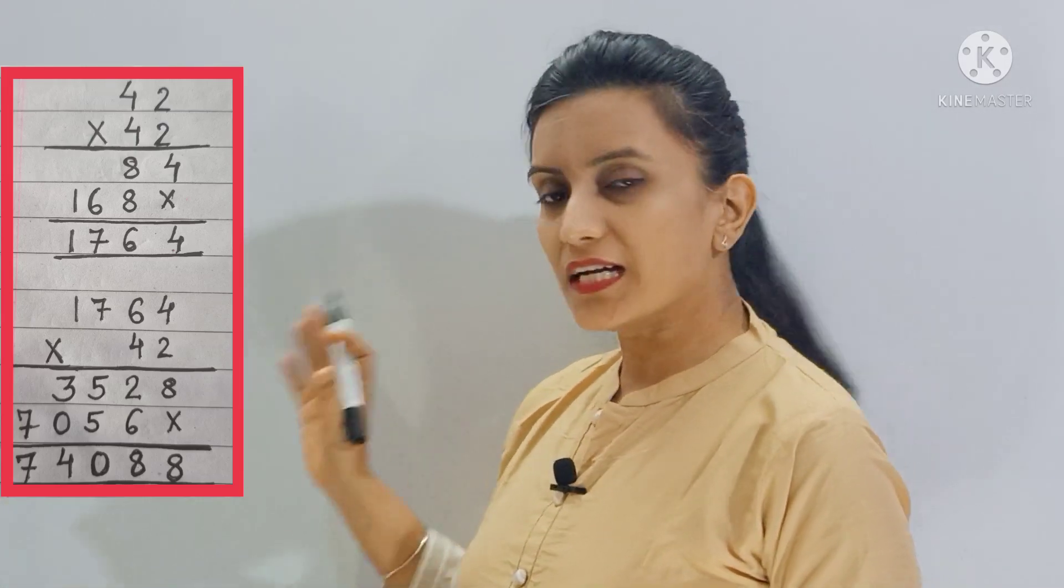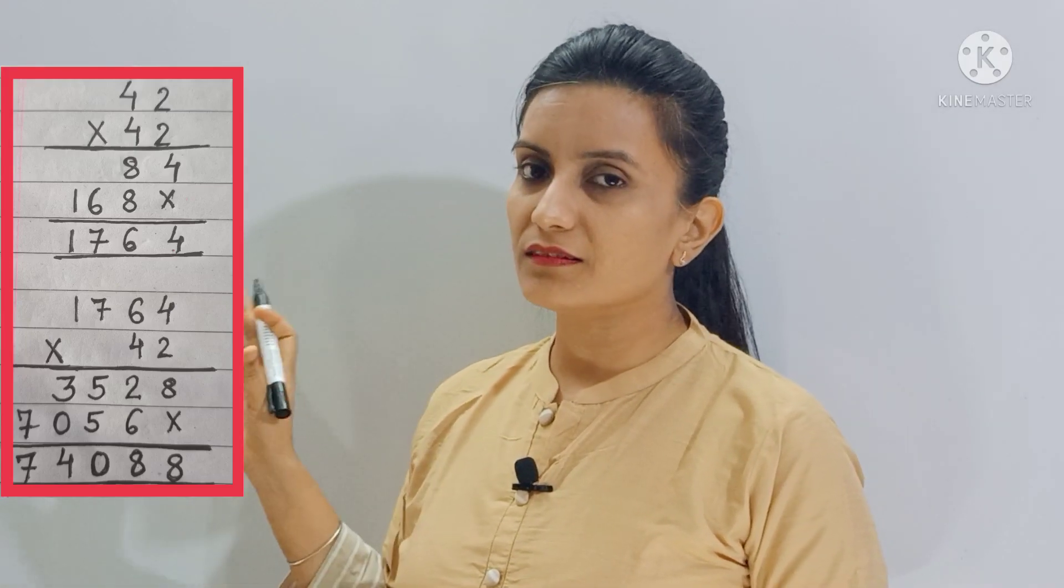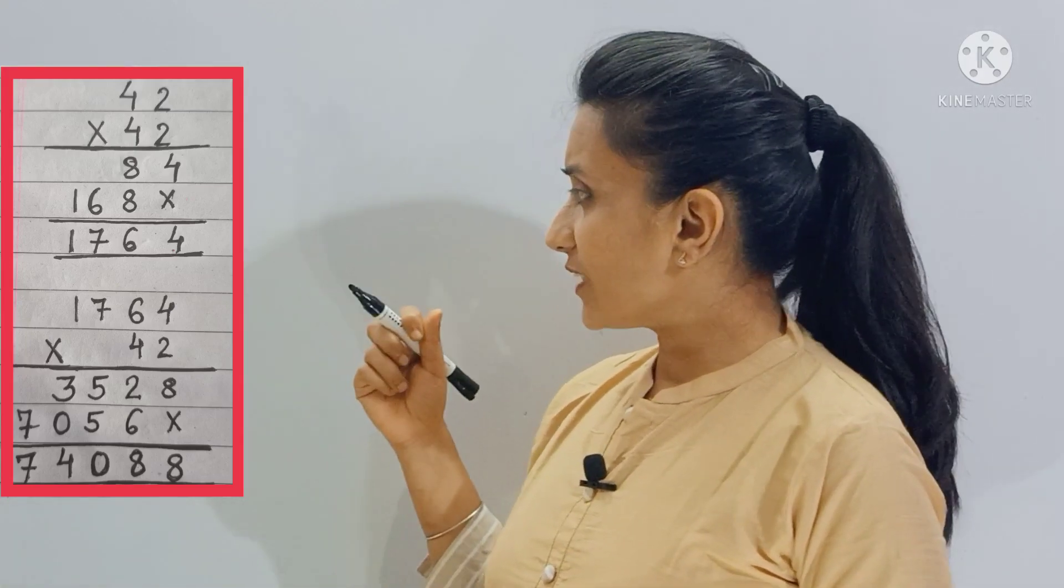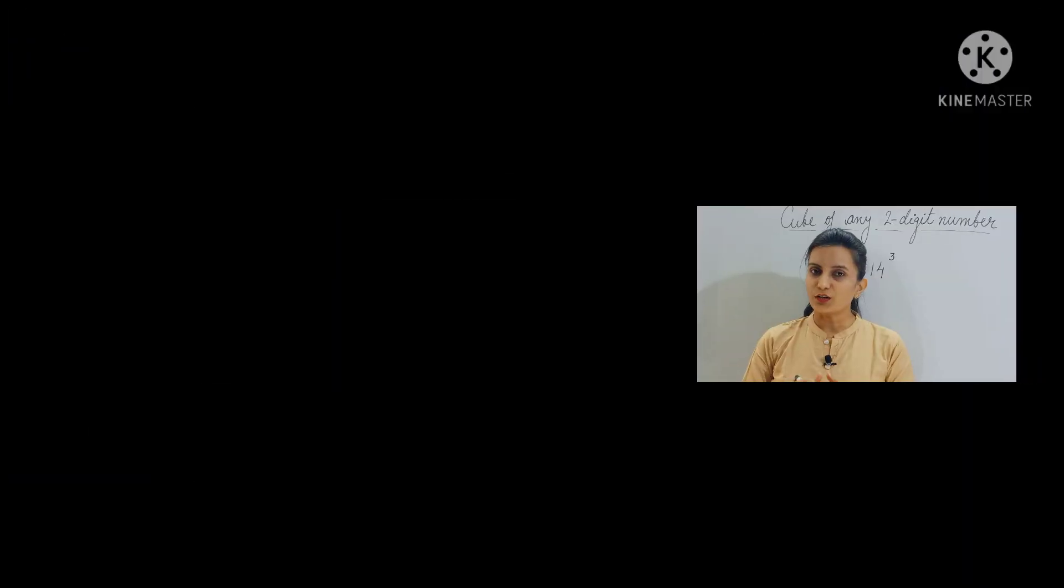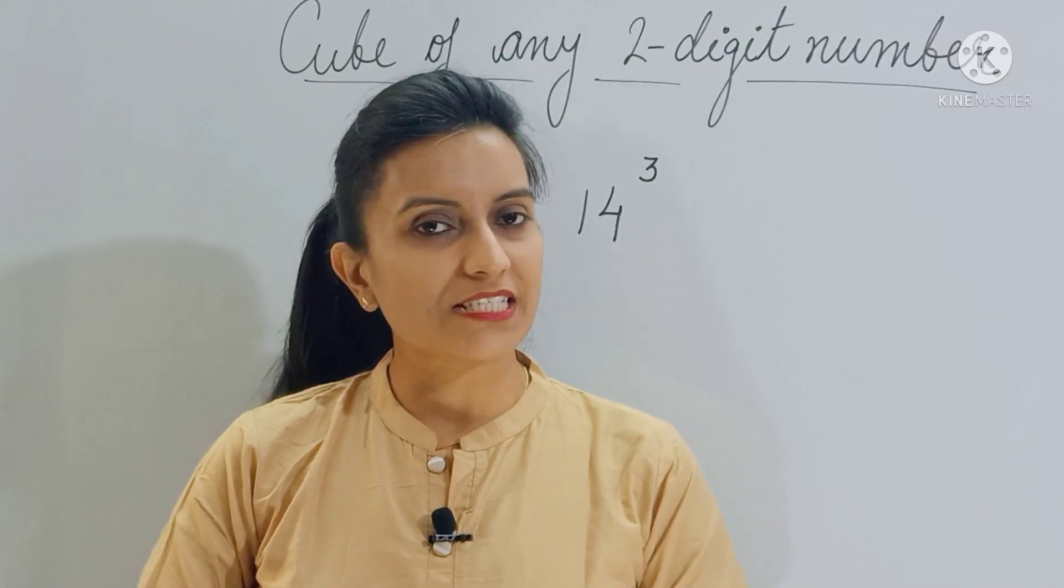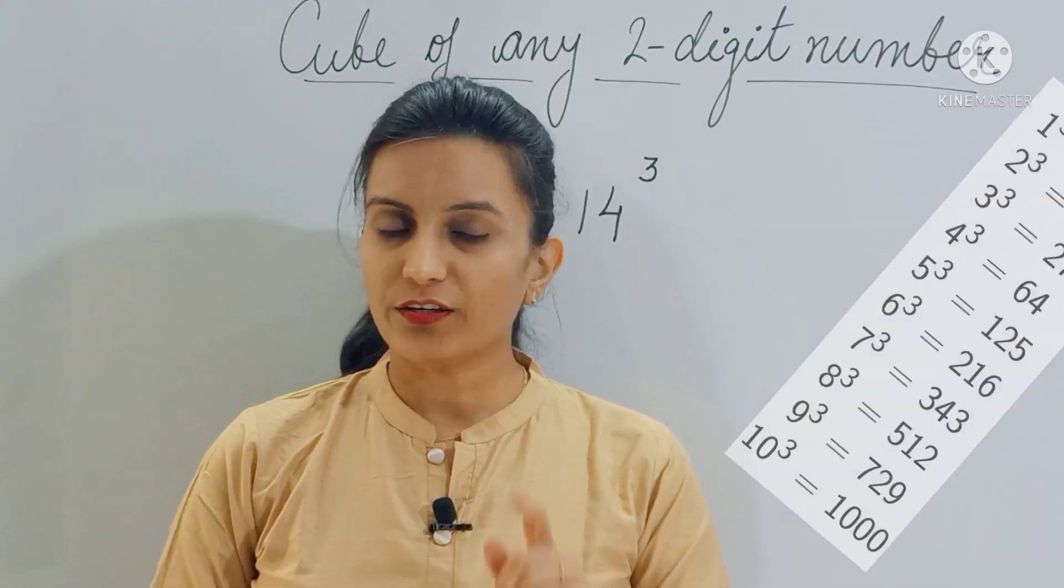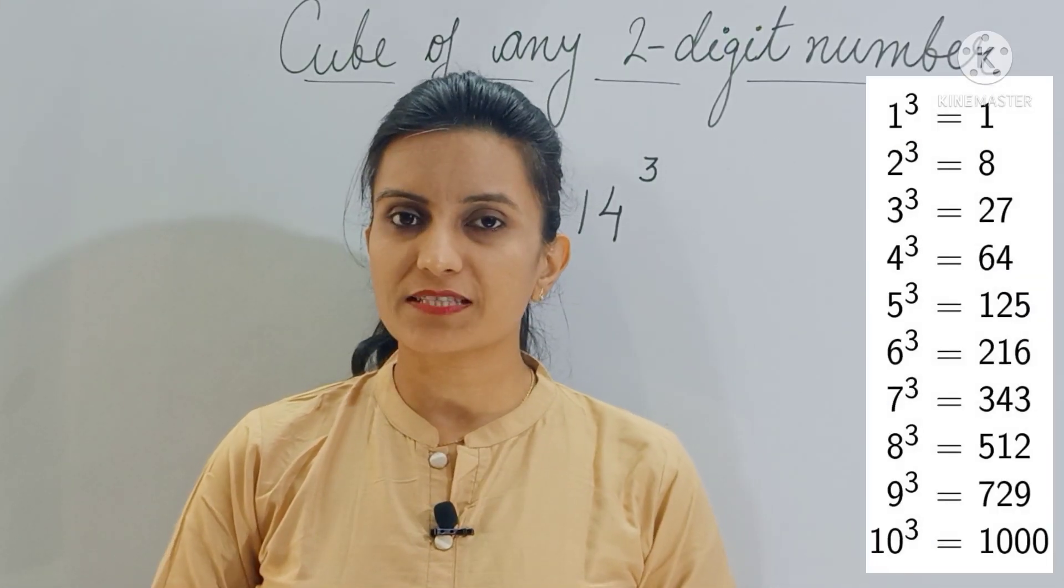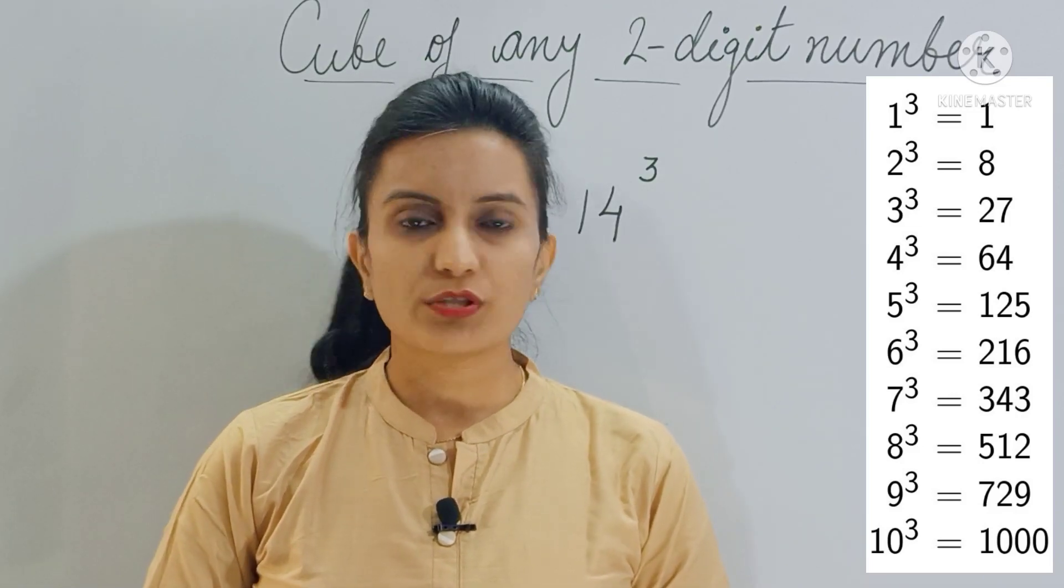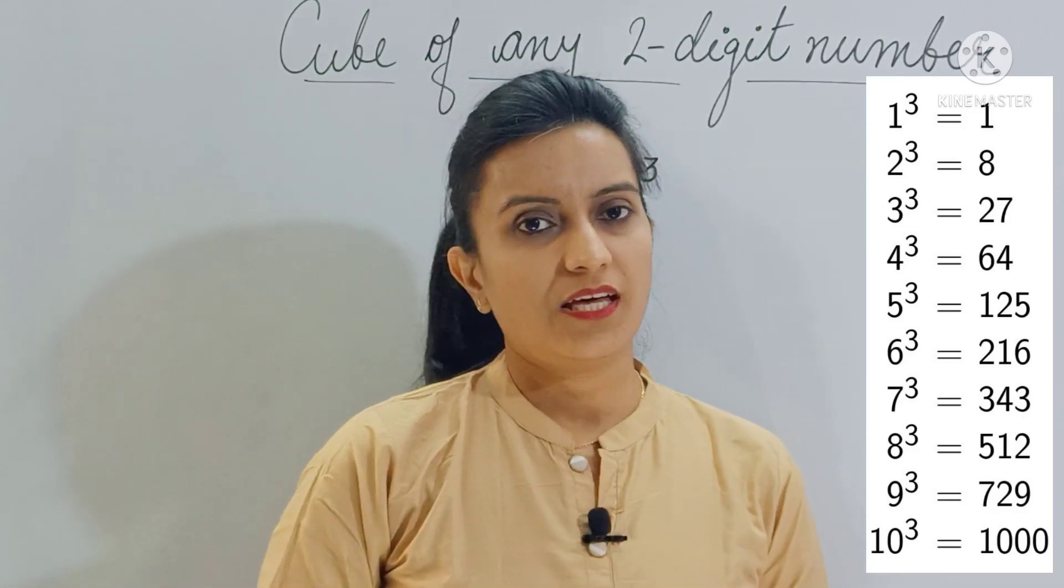So the chances of doing mistakes are more. Now if you have a shortcut method, then why would anyone prefer this traditional method? So let's get started. We all know the cubes of first 10 natural numbers, right? If you don't remember, please memorize them as it will help you increase your calculation speed. Now let's find the cube of 14.